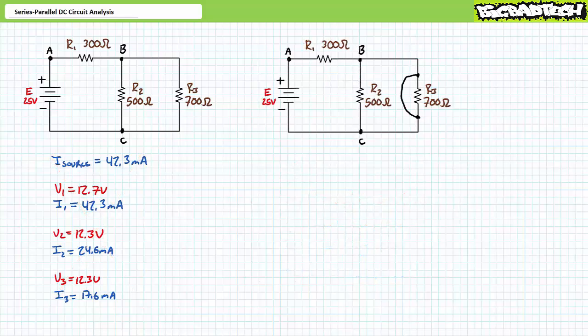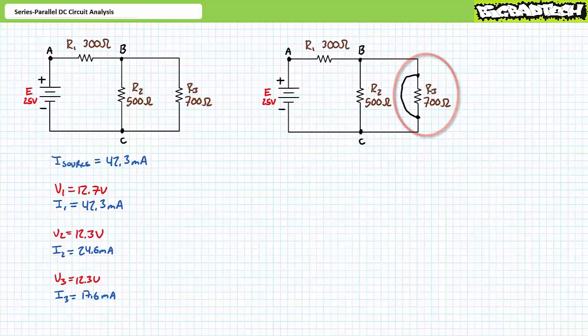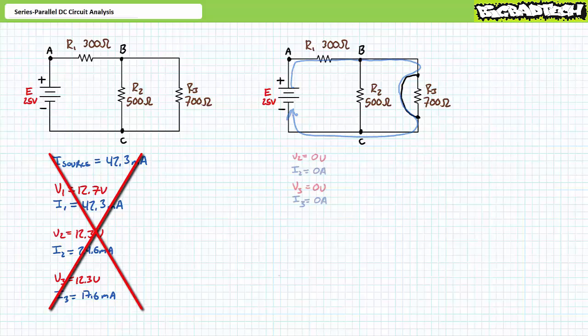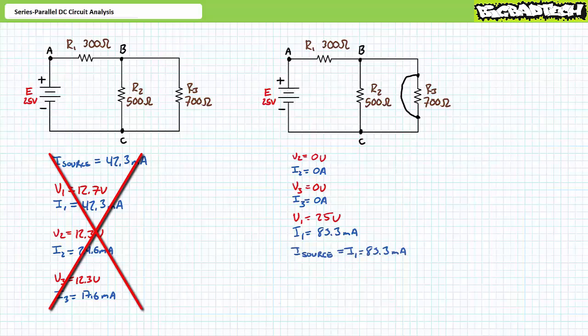Shorts inside series-parallel circuits can also fundamentally change the nature of the circuit in question. Consider a short across the leads of R3 — not only has this shorted out R3, it's also shorted out R2; the complete parallel combination of R2 and R3 has been effectively removed from consideration as all current will be routed around it through the low-resistance short. Current continues to flow through R1 and R1 only. R2 and R3 experience no current and no voltage drop. All voltage will be dropped across R1, and as such it will experience 83.3 milliamperes of current. Given one element remains in this system, source current will also be 83.3 milliamperes. The short has fundamentally changed the nature of the series-parallel circuit and all previous analyses are invalid.